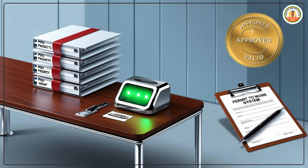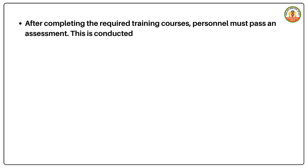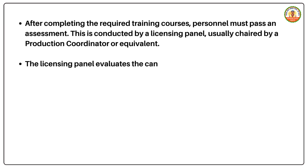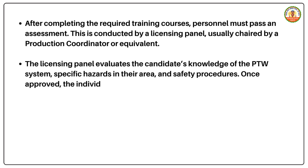Licensing Assessment and Approval: After completing the required training courses, personnel must pass an assessment. This is conducted by a licensing panel, usually chaired by a production coordinator or equivalent. The licensing panel evaluates the candidate's knowledge of the PTW system, specific hazards in their area, and safety procedures. Once approved, the individual is granted a PTW license.